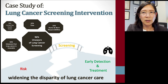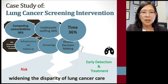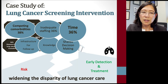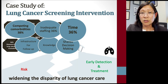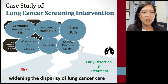Layered on top of that, providers themselves also identify barriers to getting their patients screened. For instance, 36% of providers said time is a barrier. Additional barriers include inadequate staffing, competing comorbidities, access to shared decision making, knowledge of up-to-date evidence on lung cancer screening, and infrastructure for follow-up. So there are layers of barriers at the individual, provider, institutional, and national level.